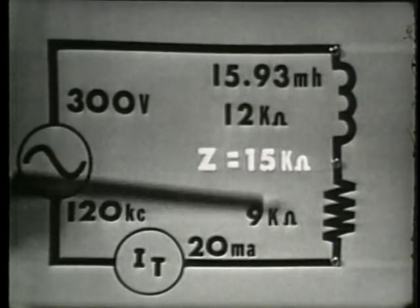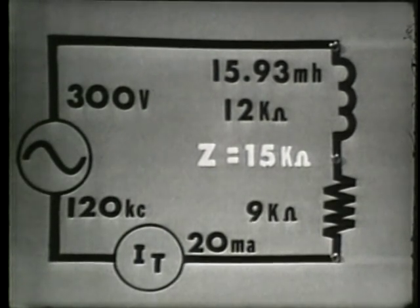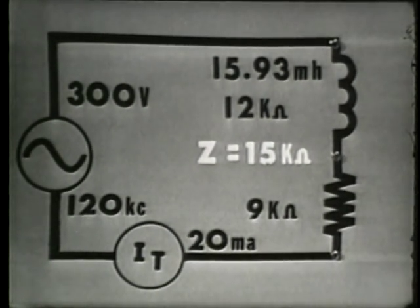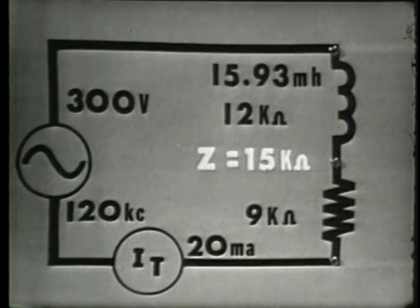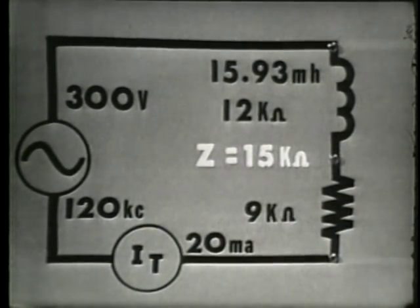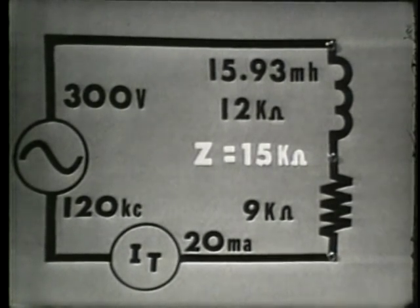These voltages that we determined with Ohm's law cannot be added algebraically, because they are occurring at different times — they are out of phase with each other. Plotting these voltages as vectors will emphasize this point. Since the voltage applied to our circuit is the only value that doesn't change, we are going to use it as our reference vector, plotting 300 volts of E applied at 0 degrees.